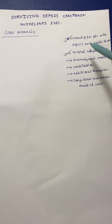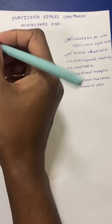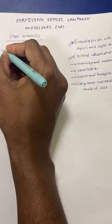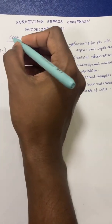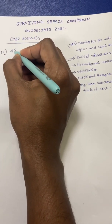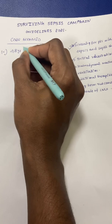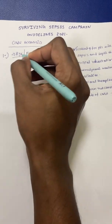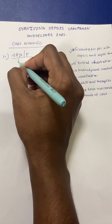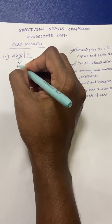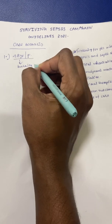Today we will be discussing the following headings of this topic. Our first part is going to focus on screening of the patient with sepsis and the initial resuscitation part in sepsis management. To understand that, I'll be creating a case scenario. Consider a 48-year-old female patient who came with complaints of burning micturition and fever for the past three days.